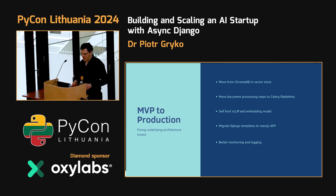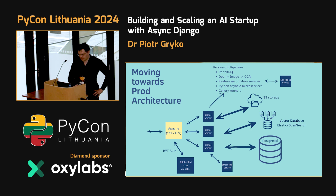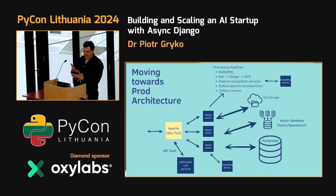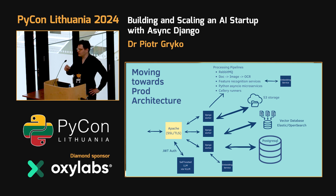We also want to migrate the Django templates to a dedicated React app, and add embedded monitoring and logging. The main change is to offload a lot of the work from Django workers onto dedicated processing pipelines. While you can run jobs asynchronously on the underlying workers, you'll run into a number of issues — the main one being that you can overload your entire workers. I also want to add useful things like S3 storage, rather than storing files in a shared volume.